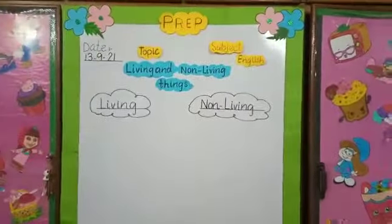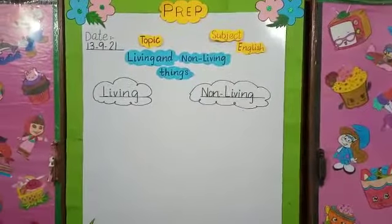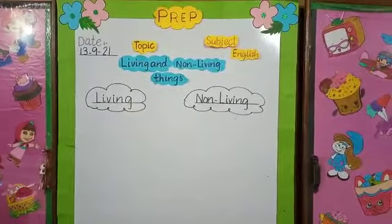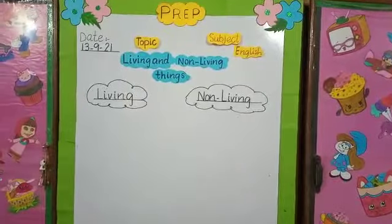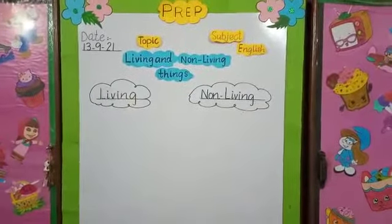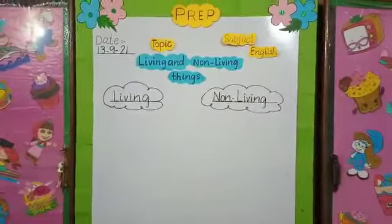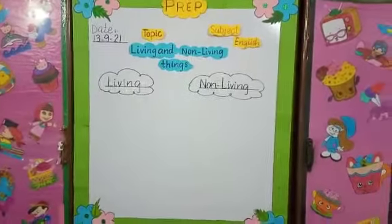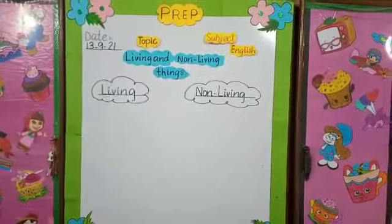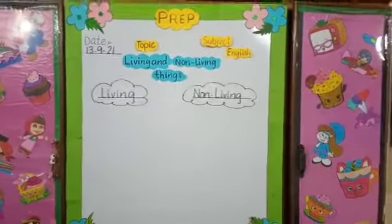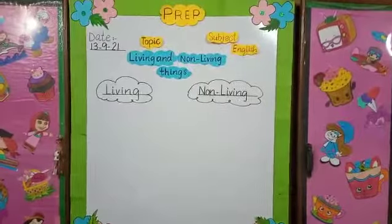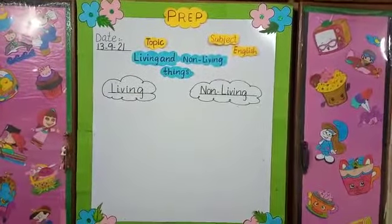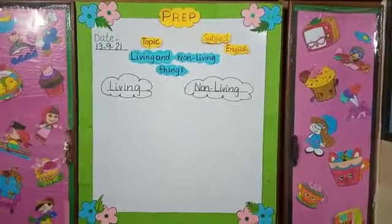Now I will tell you what are living and non-living things. Living things are those things that can grow by themselves. They can move, speak, and grow. Non-living things are those things that can't move or grow by themselves. They need someone's power to move or to grow.